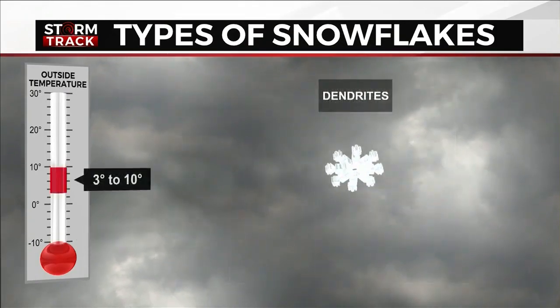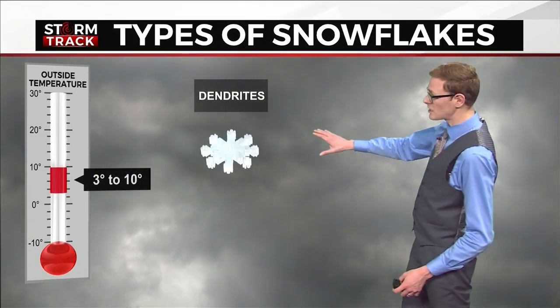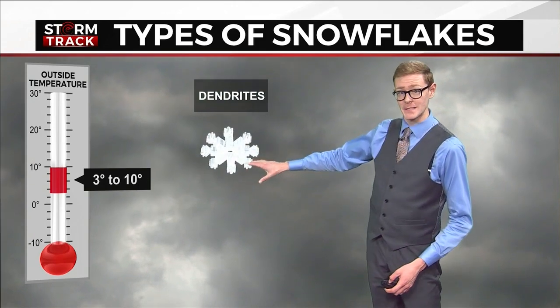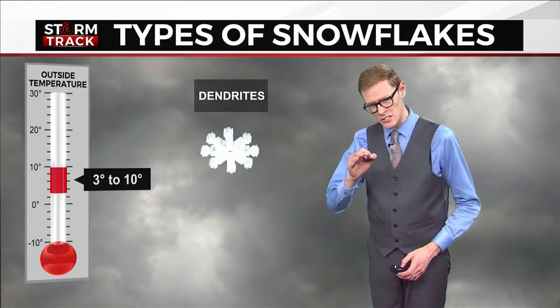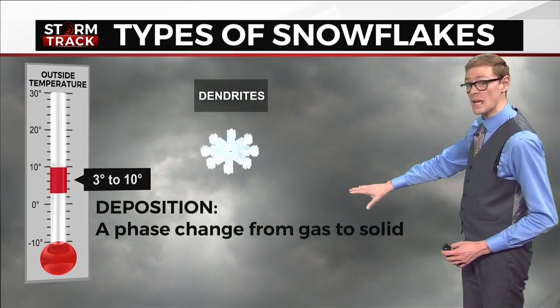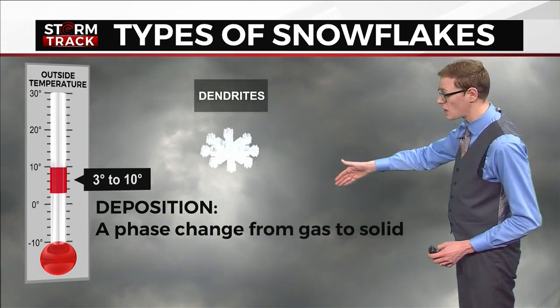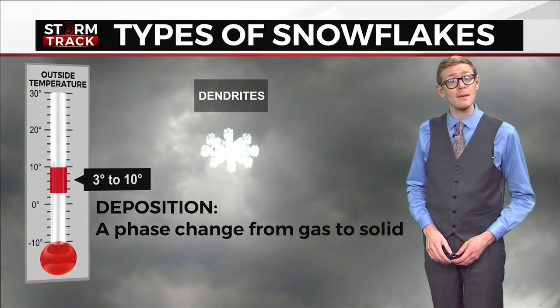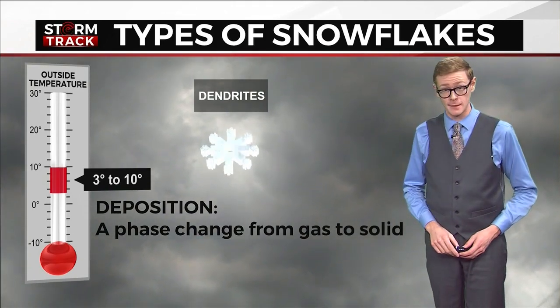Two snowflakes can be very similar, but not identical. Going back to snowflake types, dendrites are formed between 3 and 10 degrees Fahrenheit. This temperature range is the most efficient for ice crystal growth because it's cold enough for a process called deposition — a phase change going directly from gas to solid. We go from water vapor to ice crystal without a water drop.